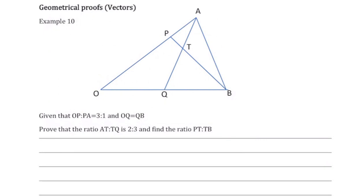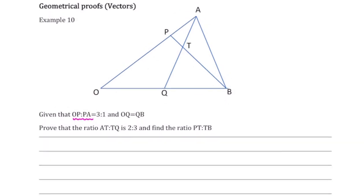We're told that OP to PA is 3 to 1, so O to P is three-quarters and P to A is a quarter of whatever the vector O to A is. We're also told that O to Q equals Q to B, so Q is the midpoint of O to B — O to Q and Q to B are the same length.